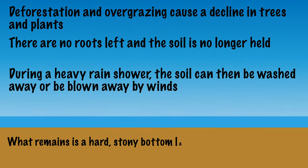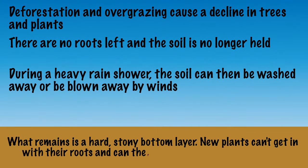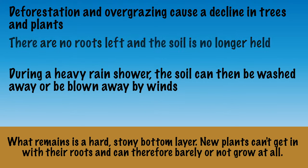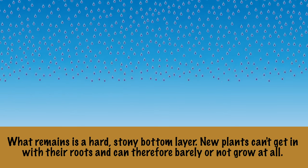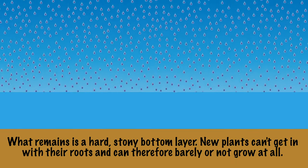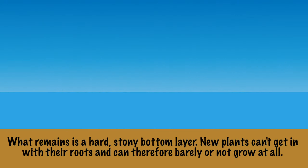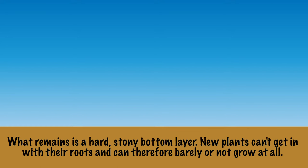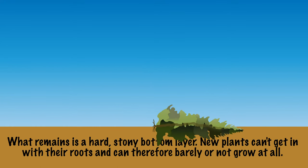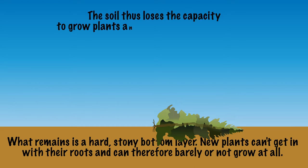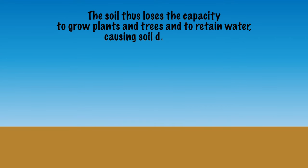What remains is a hard, stony bottom layer. New plants can't get in with their roots and can therefore barely grow at all. Also with a new rain shower, the water cannot enter the soil, so it washes over the surface. Because there is no water available in the soil, vegetation can grow even more difficultly. The soil thus loses the capacity to grow plants and trees and to retain water, causing soil degradation.